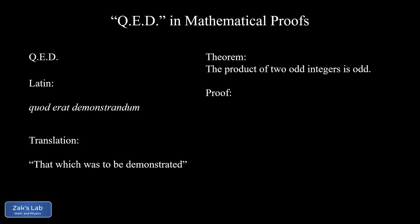So here's our theorem. The product of two odd integers is odd. And now we need to try to prove this thing. So we're going to start by letting M and N be odd integers.